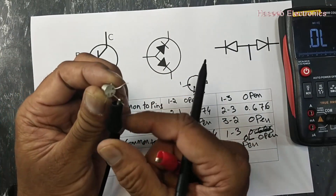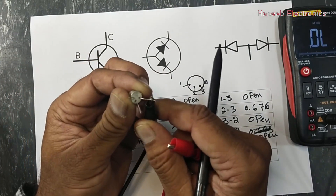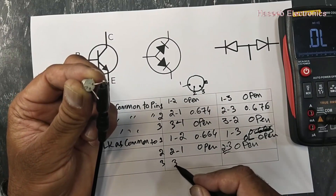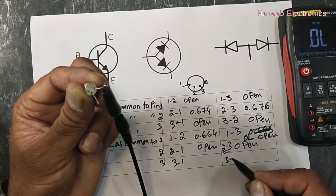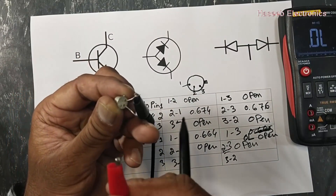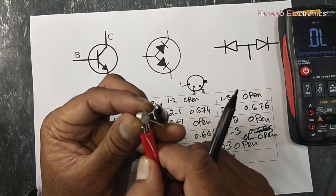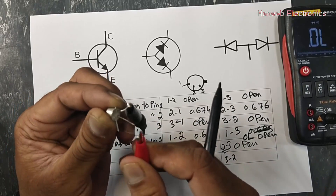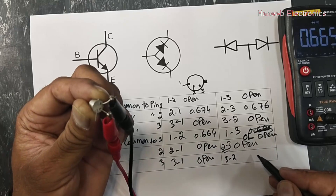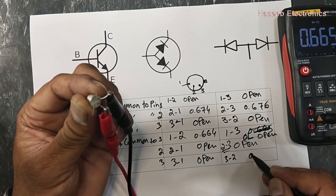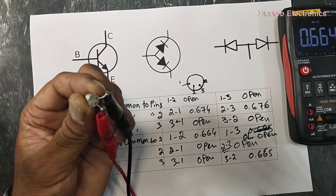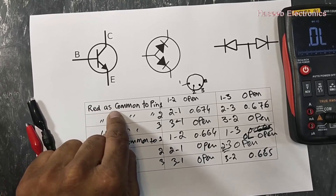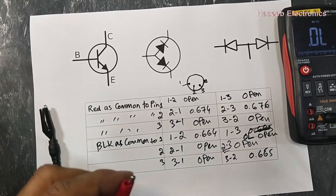Now we will select black lead as common to pin number 3 and take reading between 3 and 1, and 3 and 2. Red lead here — open. And 0.665.